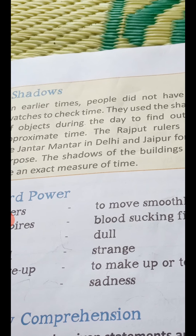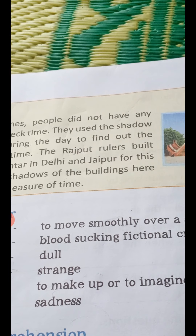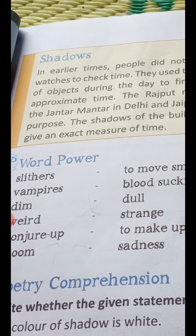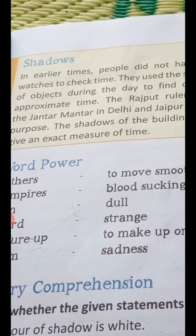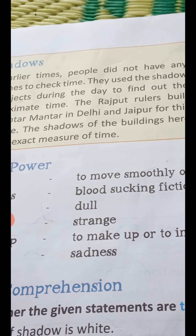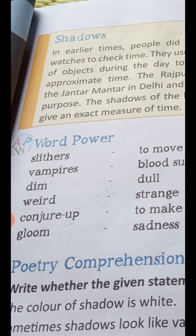The Rajput rulers built the Jantar Mantar in Delhi and Jaipur for this purpose. The shadows of the buildings at the Jantar Mantar give an exact measure of time.